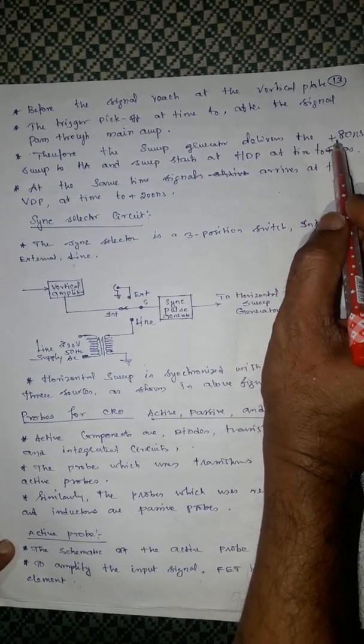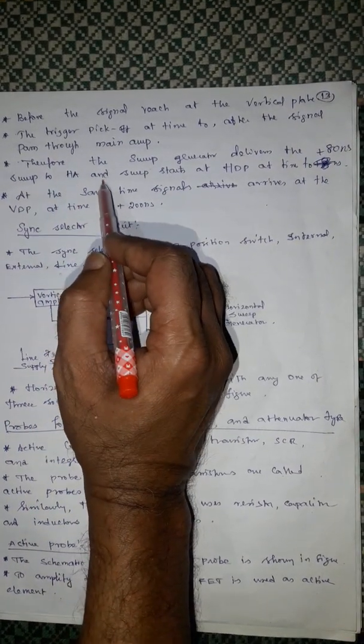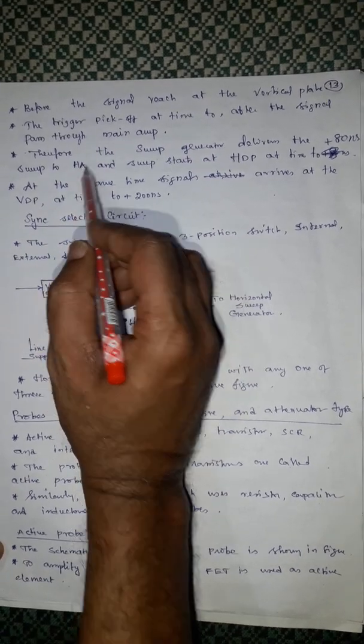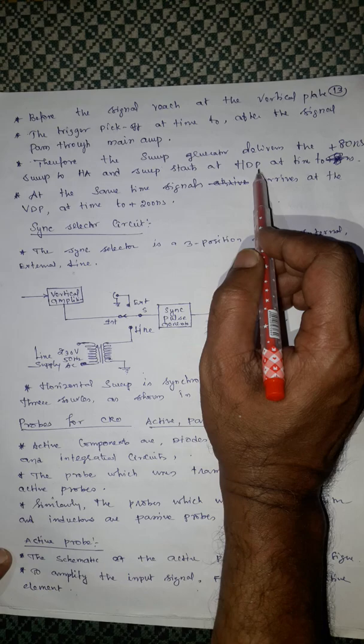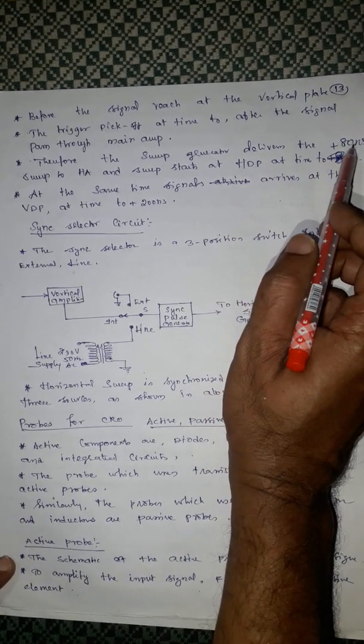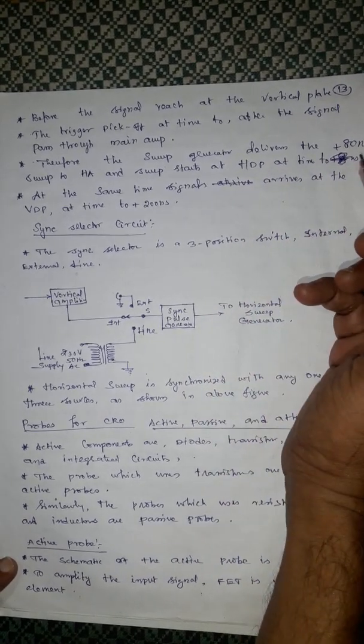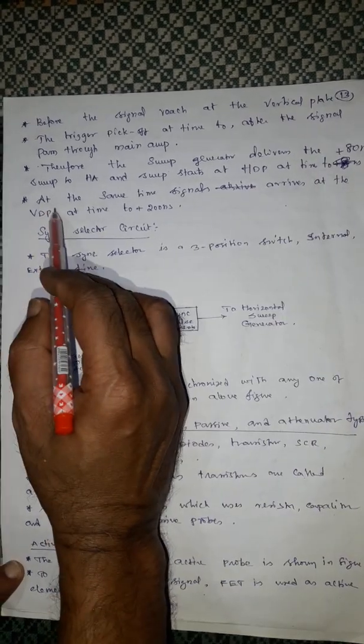Therefore, the sweep generator delivers the positive 80 nanosecond sweep to the horizontal amplifier. Sweep starts at horizontal at the time of 80 nanosecond.